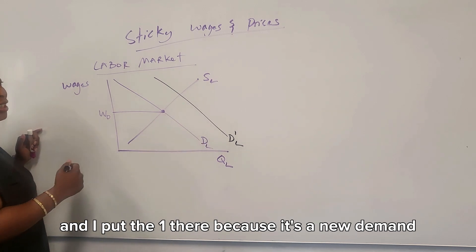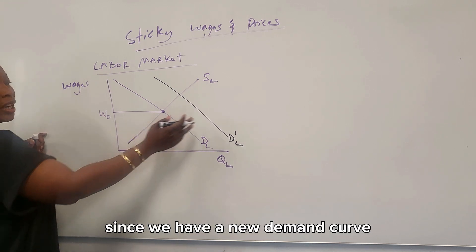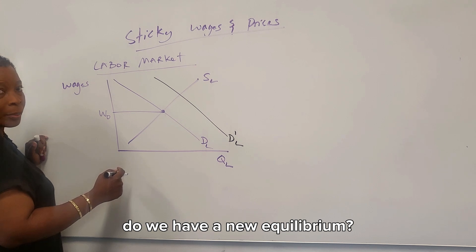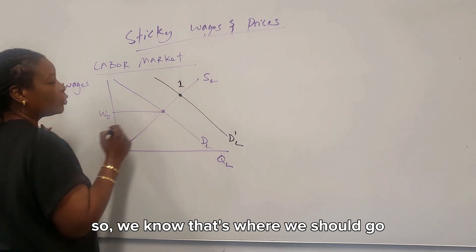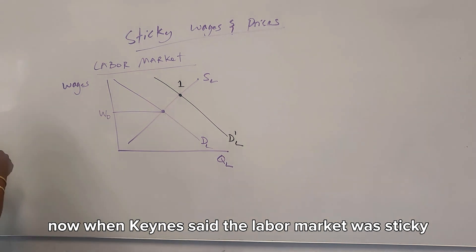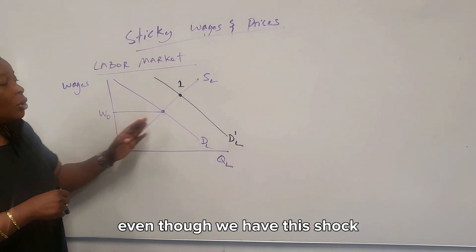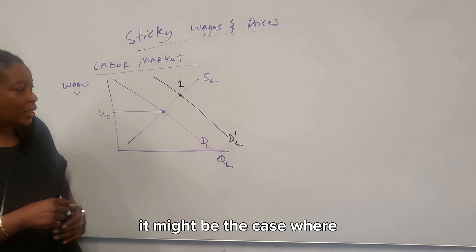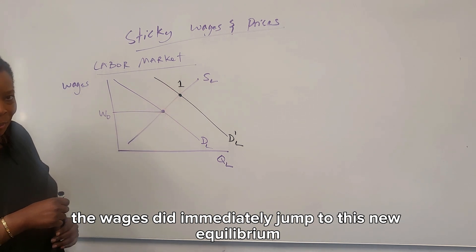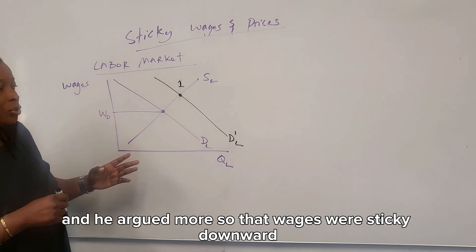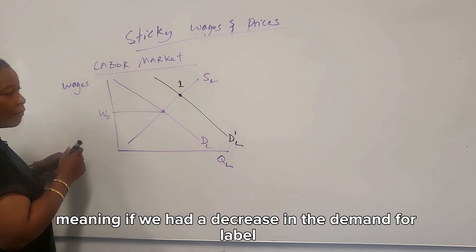And I put the one there because it's a new demand. Now what should technically happen is since we have a new demand curve, do we have a new equilibrium? Yeah, it's right here. I'm going to put a one up there so we know that's where we should go. Now when Keynes said the labor market was sticky, what he meant was even though we have this shock overall to the labor market, it might be the case where the wages didn't immediately jump to this new equilibrium. And he argued more so that wages were sticky downward. Meaning if we had a decrease in the demand for labor, which way would this go?